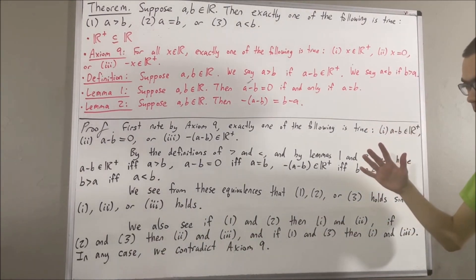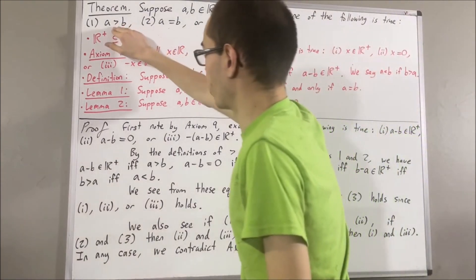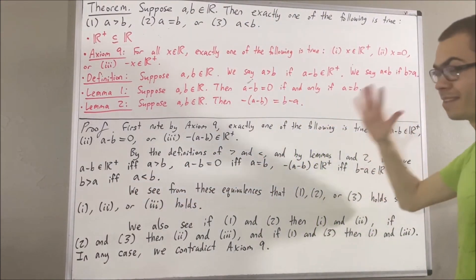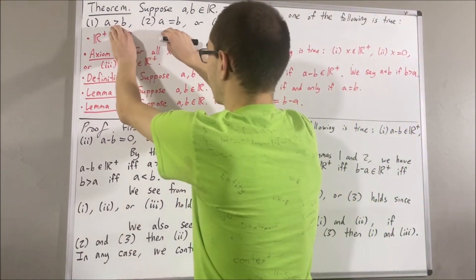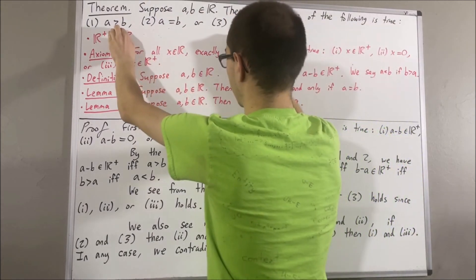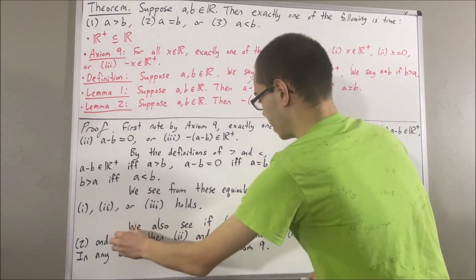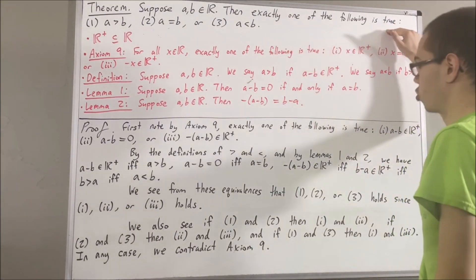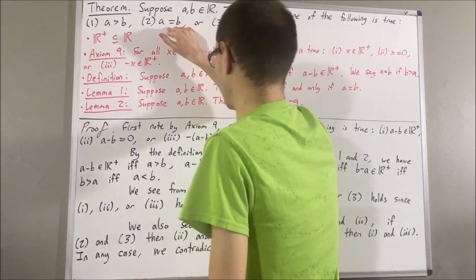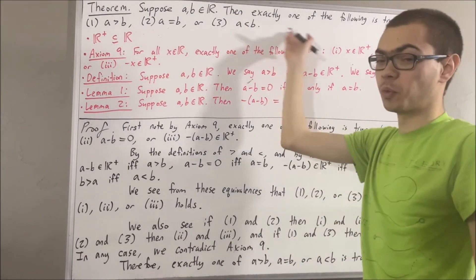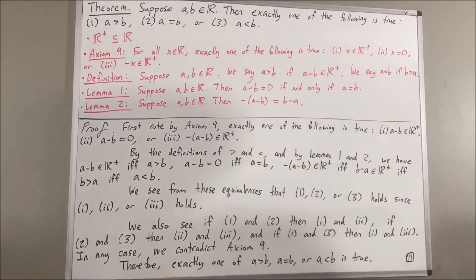Putting this all together, we have shown that a is greater than b, or a equals b, or a is less than b; and that it cannot be the case that a is greater than b and a equals b, that a equals b and a is less than b, or that a is greater than b and a is less than b. This is precisely what it means to say exactly one of the following is true. That is exactly what we wanted to prove, so this completes the proof.